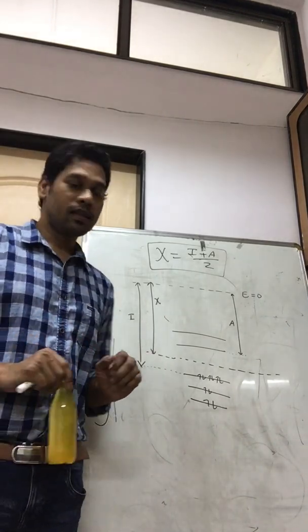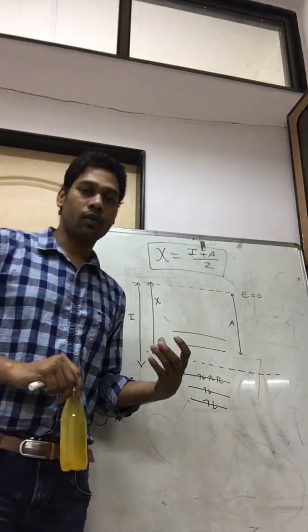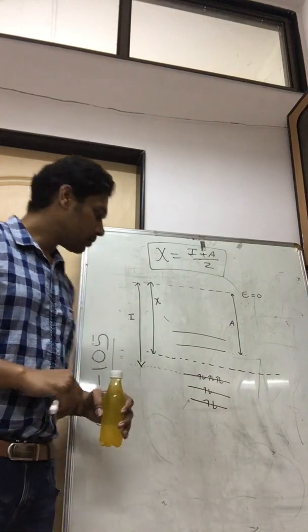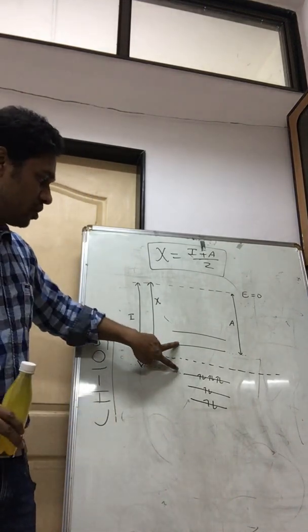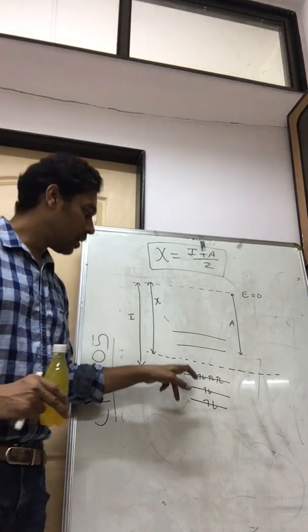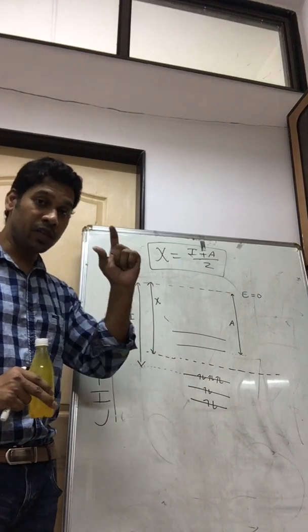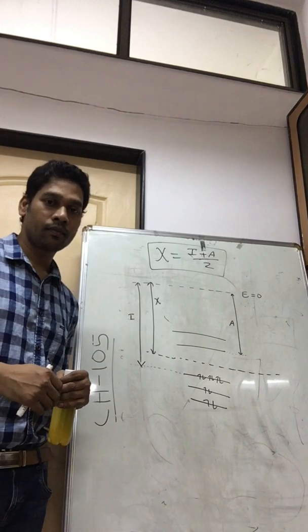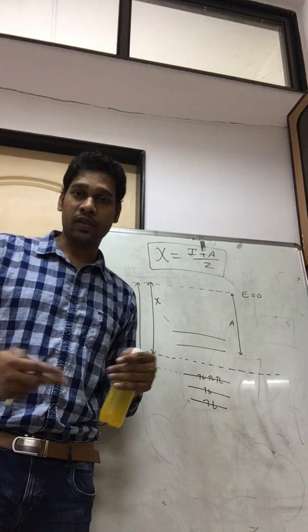If you understand this concept, we can extend it to understand what is polarization. Polarization basically means the difference between the highest occupied atomic orbital and the lowest unoccupied atomic orbital. If the difference between these two is very small, then we can easily polarize your atom. If it is very high, then it is very difficult to polarize your atom.